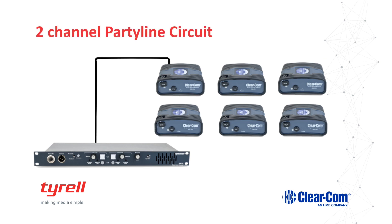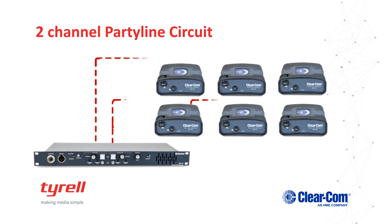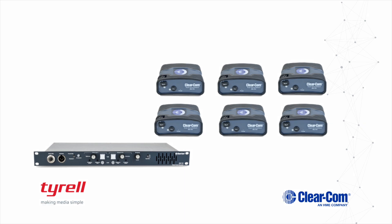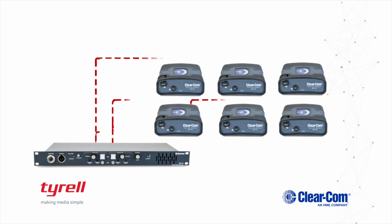Just as a side note, nearly all 2-wire capable Clearcom main stations can be operated in either Clearcom or RTS modes. This particular main station, the Clearcom MS702, allows for two separate channels of 2-wire. The MS702 also allows for those two channels to be linked together via an AB-link switch, allowing the system to be one complete party-line channel or two discrete channels when necessary.